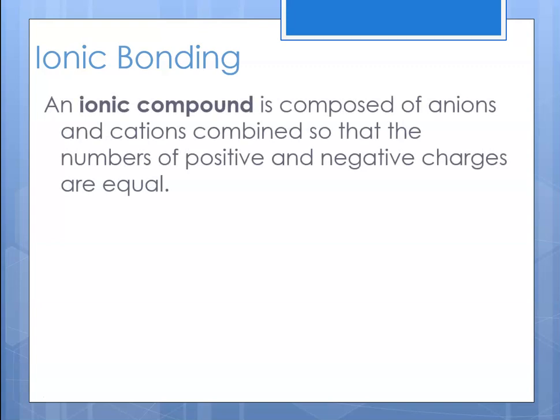With ionic bonding, the ionic compound is really composed of anions and cations, and they're combined so that the numbers of positive and negative charges are equal. That's because atoms are going to do what they need to do to get to a stable octet, to get to a low energy state. They're going to rearrange themselves such that everybody gets charged ions.